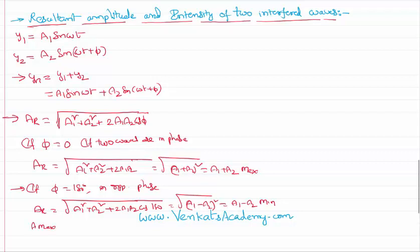So it's very clear that the ratio of amplitude maximum to amplitude minimum of the resultant waves will be (a1 plus a2) by (a1 minus a2) whole square — expressed in terms of amplitude.